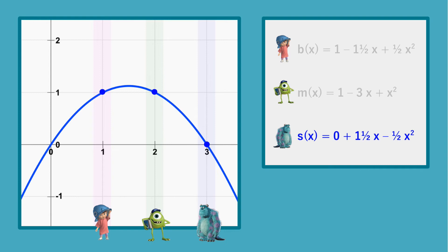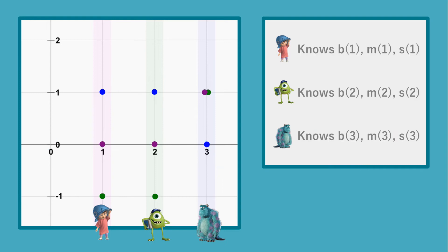Alright, so let's have an overview of the shares that have been given out so far. Boo knows the shares of all three polynomials for x is 1, Mike knows the shares for x is 2, and Sully knows the shares for x is 3. Importantly, they do not share this information with the other parties.